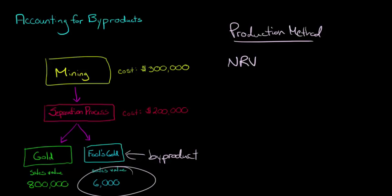This $6,000 in fool's gold is going to reduce your cost. You've got $500,000 in cost that you incur to produce the gold. Well one thing you could do is you could reduce your cost of goods sold for the gold.